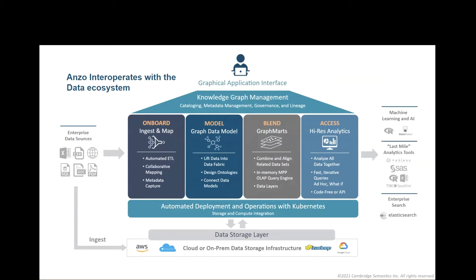Anzo supports that end-to-end workflow. Two key points about this architecture: first, Anzo is cloud agnostic and we deploy on all the public clouds as well as on-prem infrastructures. Second, Anzo leverages Kubernetes for scalability — both on ingest of structured and unstructured sources, as well as compute in terms of being able to harmonize and do in-memory transformation on the incoming data sources.